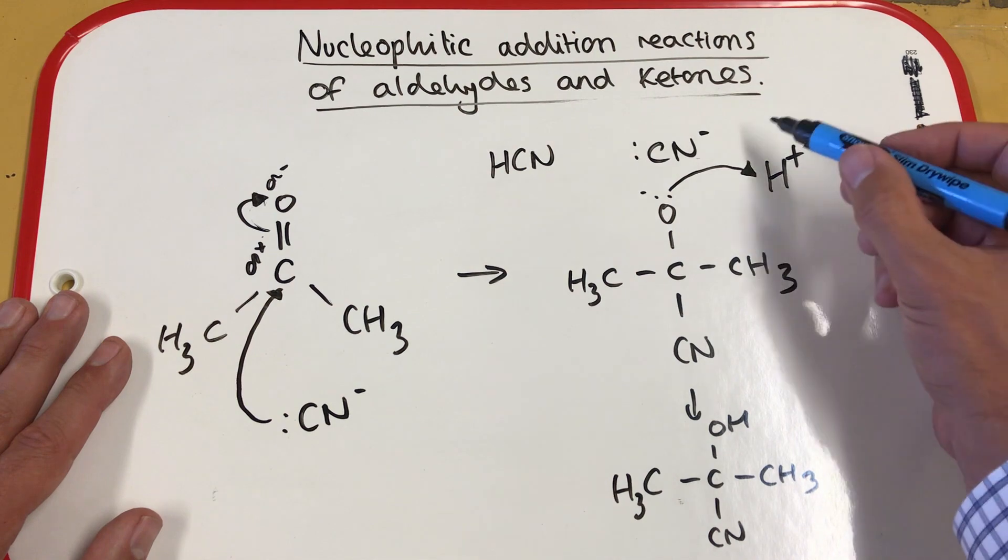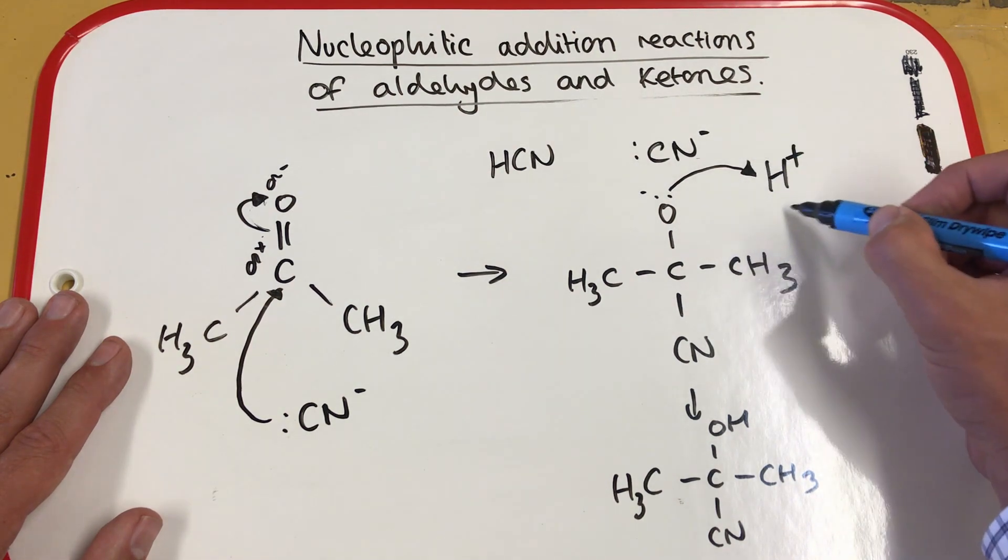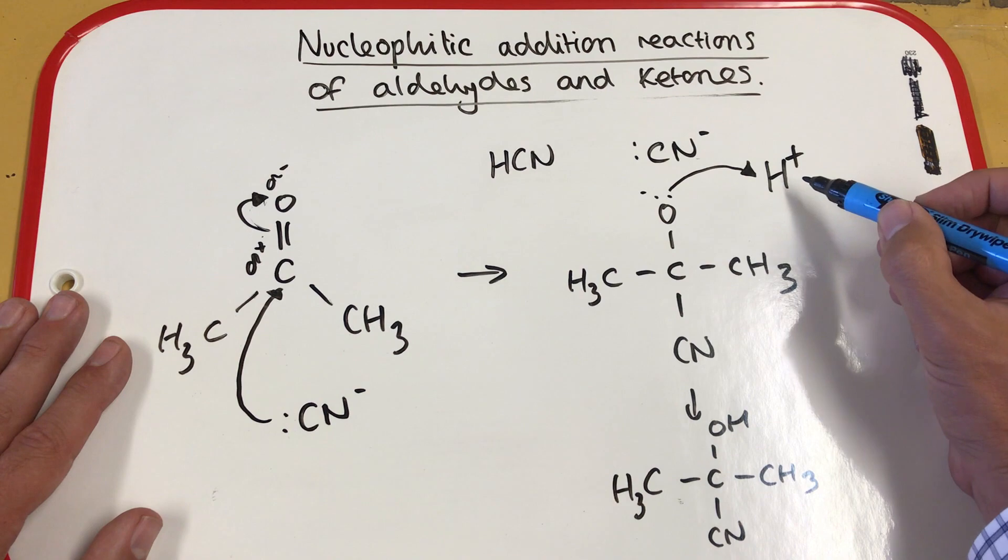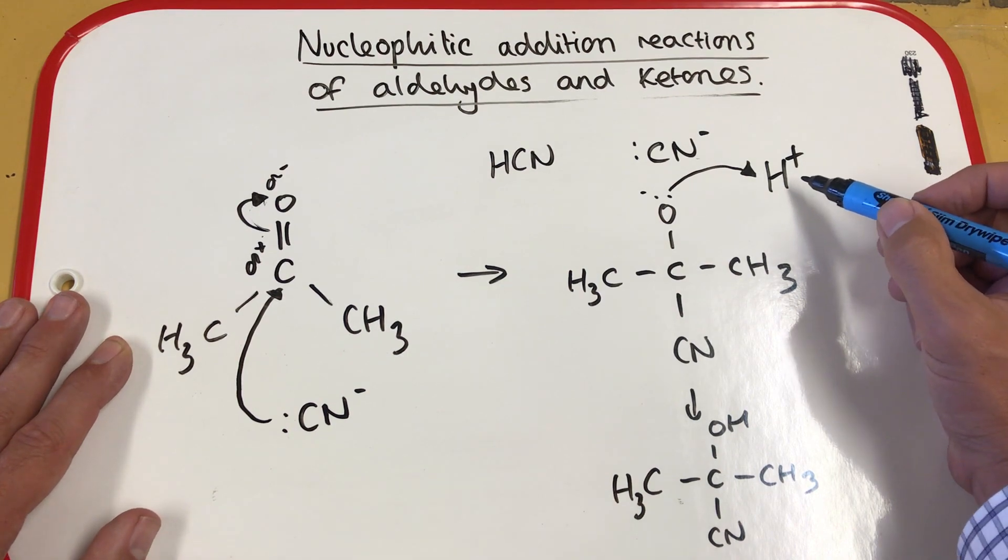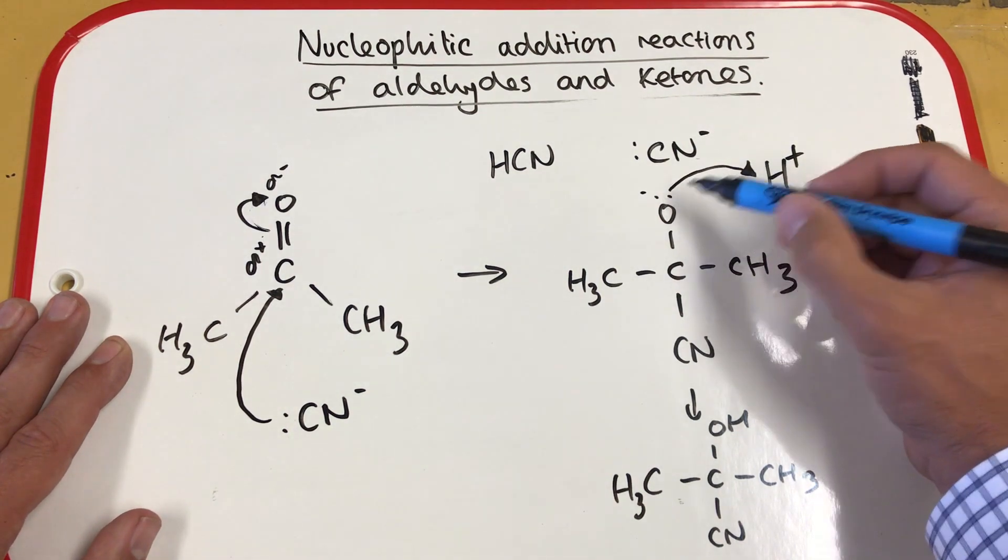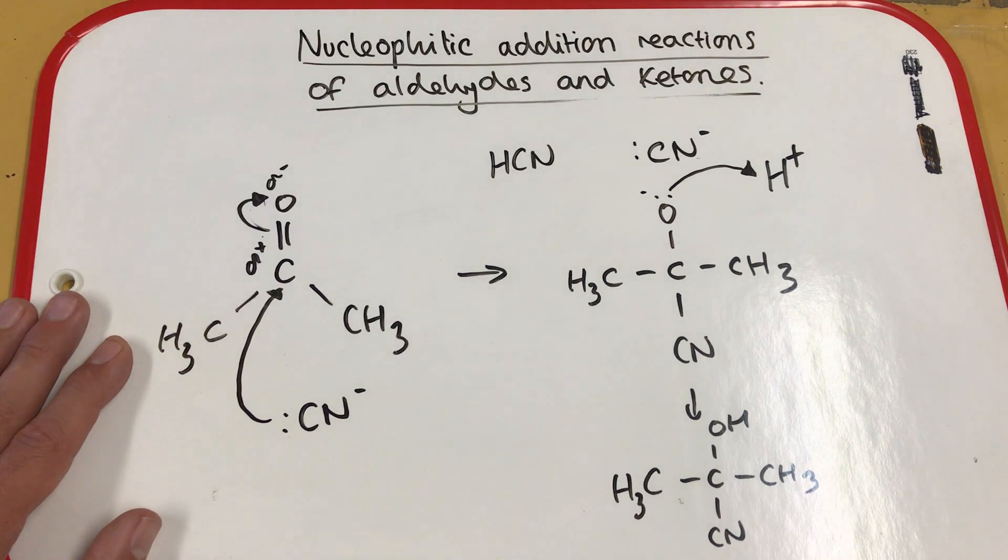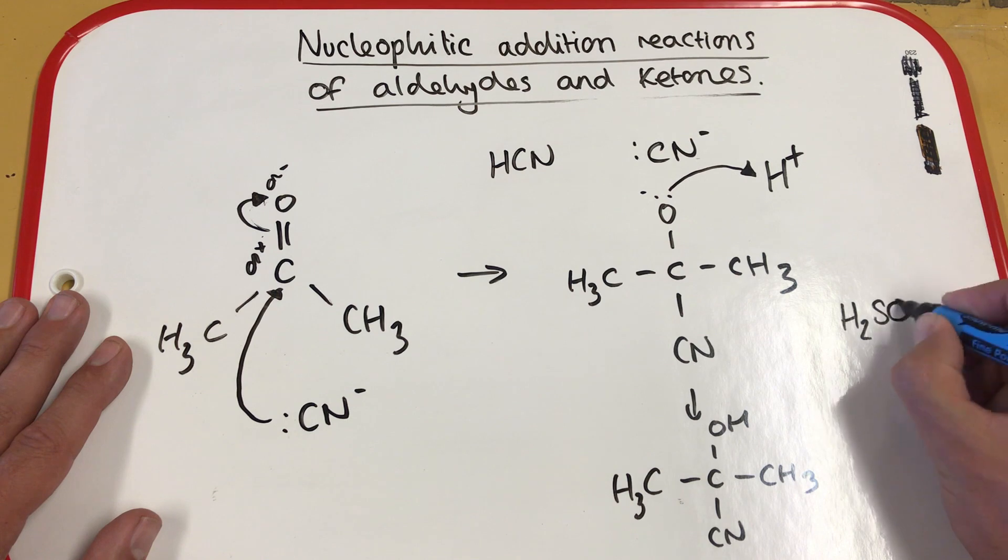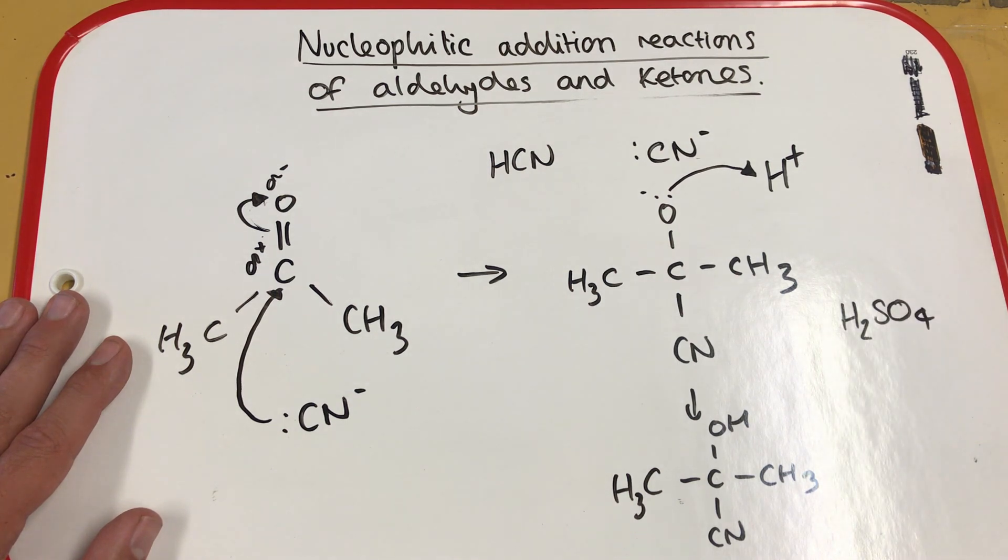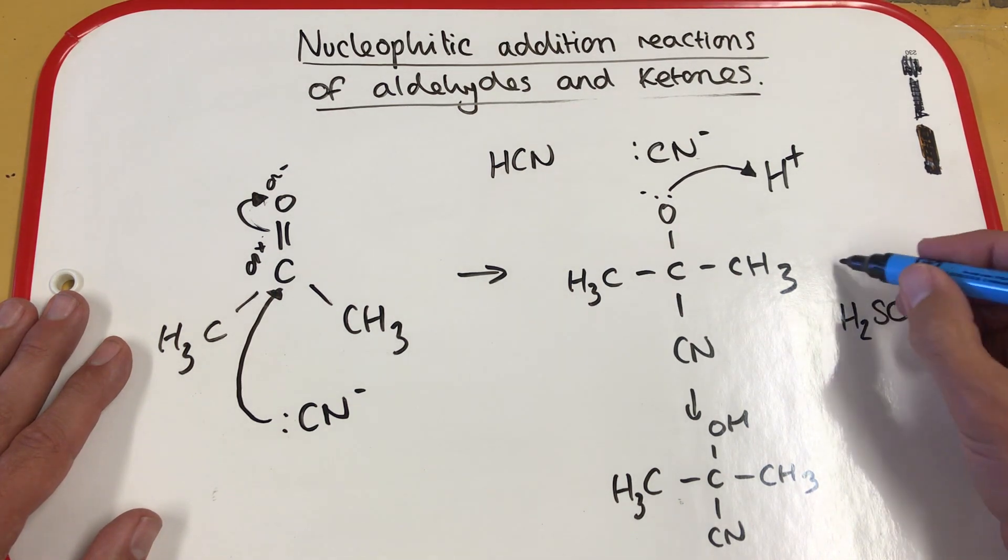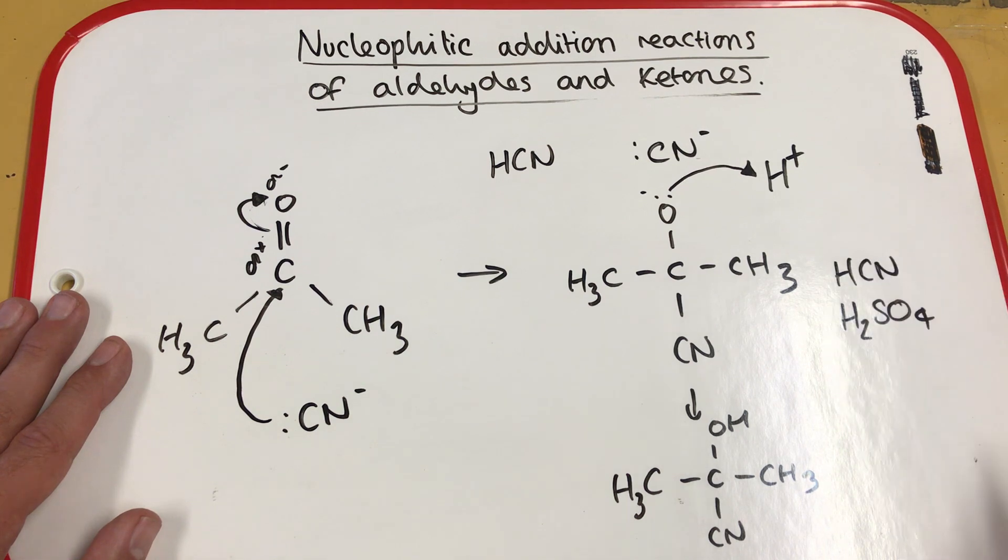So for this particular reaction, our source of H+ here is slightly different. In our previous reaction, the source of the hydrogen here to form the alcohol group was water. Now in this mechanism, our source is sulfuric acid. So we use a small amount of sulfuric acid with our hydrogen cyanide.